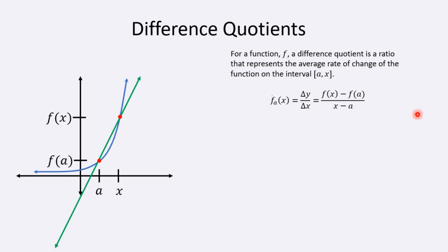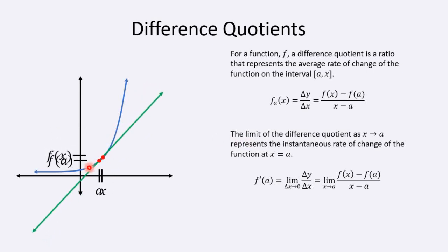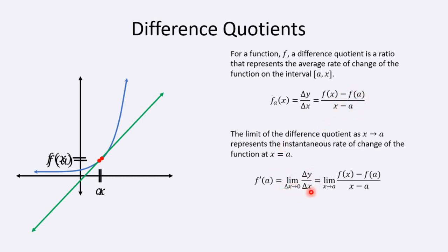To represent the instantaneous rate of change, we take the limit. As x gets closer to a, f of x gets closer to f of a, and this limit represents the instantaneous rate of change. Obviously x cannot equal a, because if x equals a we'd have f(a) minus f(a) — which is zero — divided by a minus a, which is also zero, giving an indeterminate form. As long as we're looking at the limit as x approaches a, we don't have to worry about division by zero.